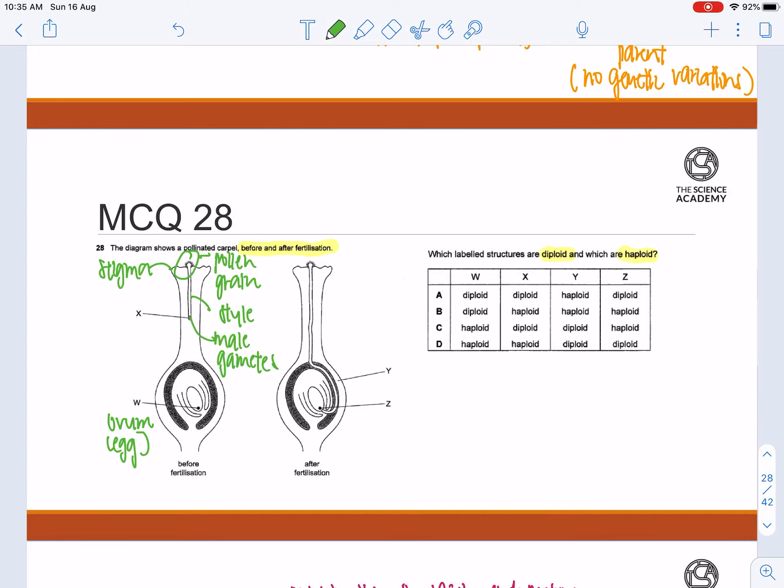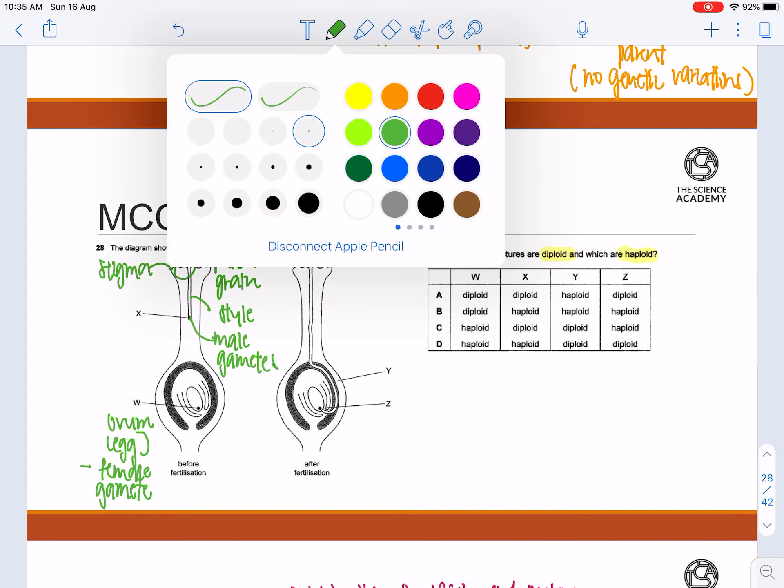Since the ovum or the egg cell is also a female gamete, both the ovum and the male gametes are essentially haploid.